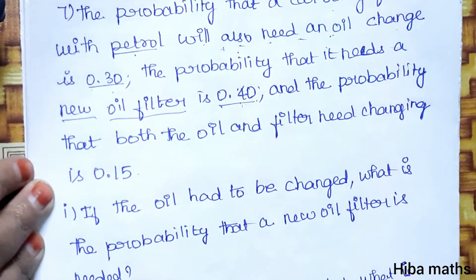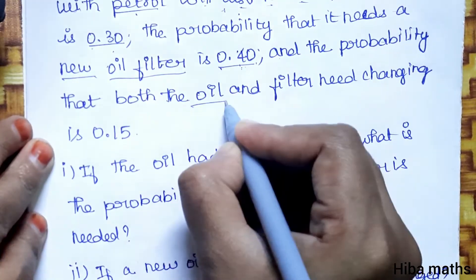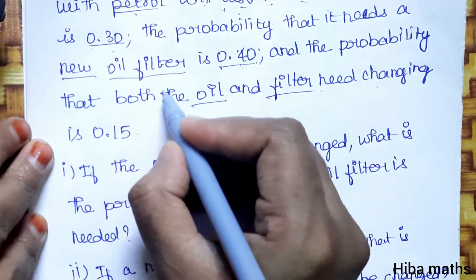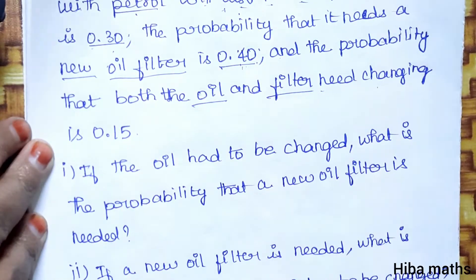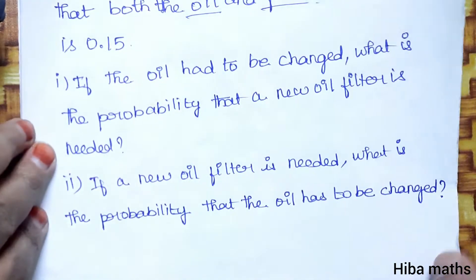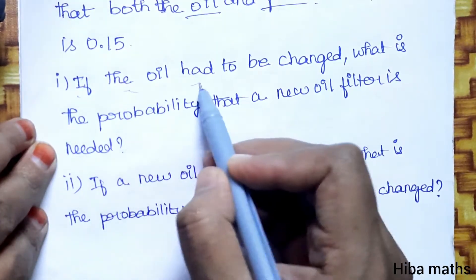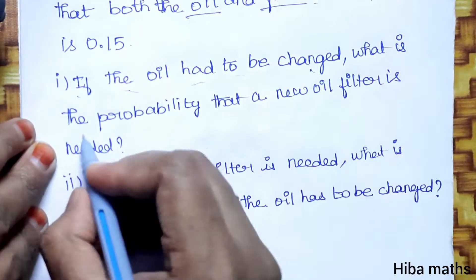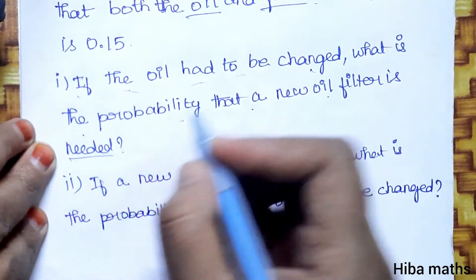The probability that both oil and filter need changing is 0.15. The first question is: if the oil has to be changed, what is the probability that a new filter is needed?